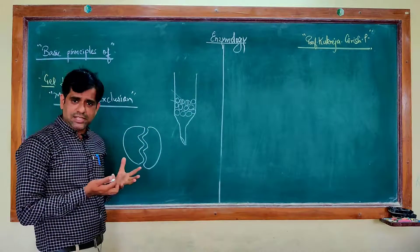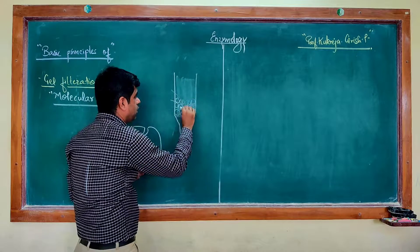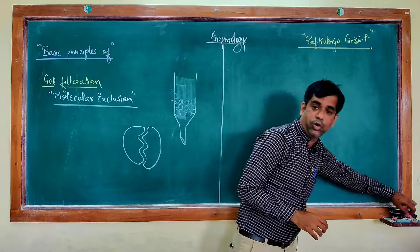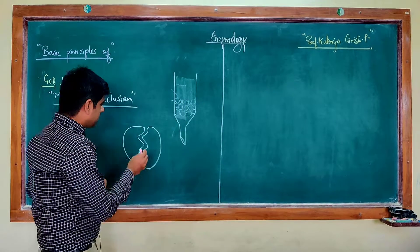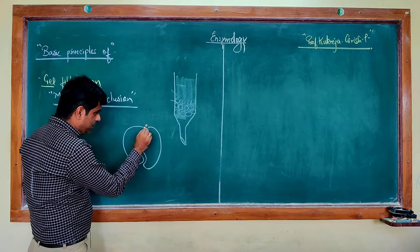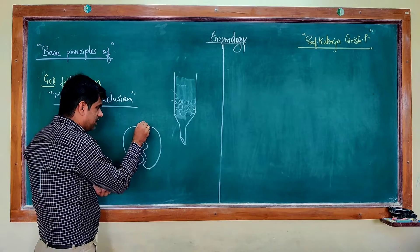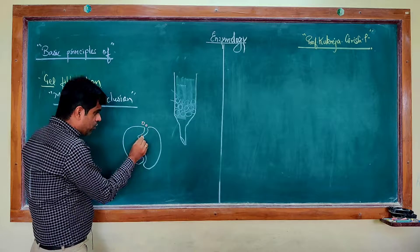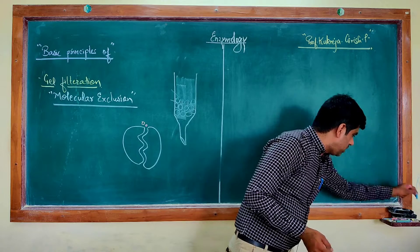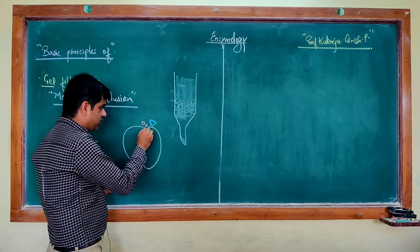You have a mixture of proteins and this mixture of proteins is now layered on top of this particular column. You have different proteins which have different molecular sizes. Some of the proteins will have a molecular size which is smaller than the pore of this particular bead. There might be some proteins which have a molecular size exactly similar to the pore of this particular bead. On the other hand, you may have certain protein molecules whose molecular size is much greater than the pore size of this particular bead.